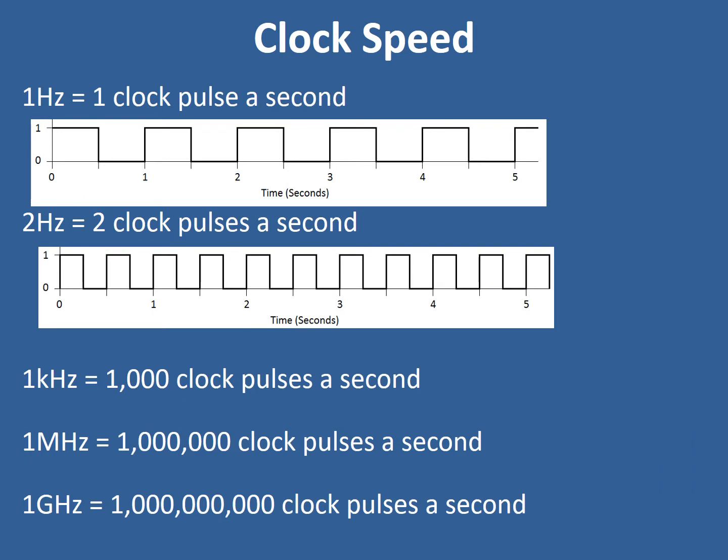We can think of clock speed as a pulse per second. If you look at the top graph, this would be one hertz — one clock pulse per second. Remember that binary is used, so there's an on and an off. If we double the clock speed this becomes two hertz — two clock pulses a second — and you can see that it turns on twice.